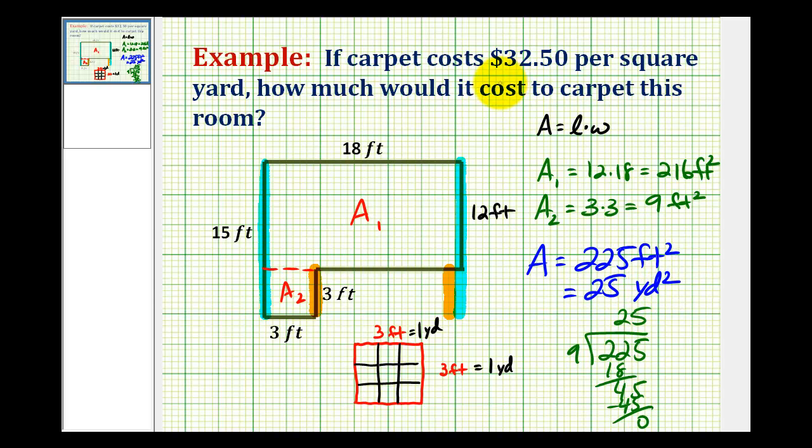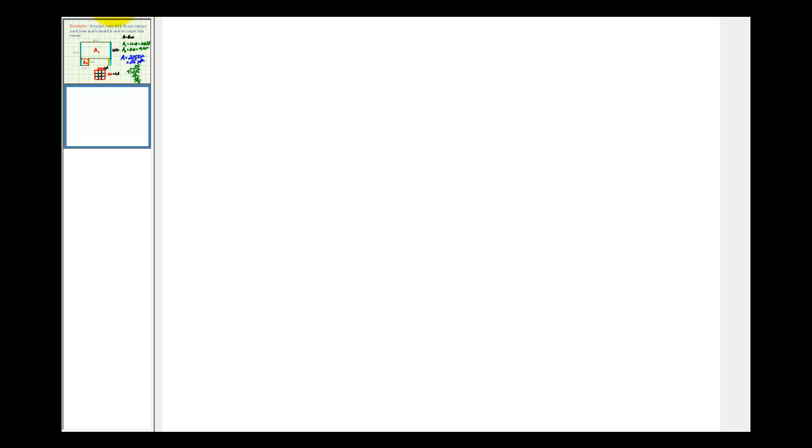And so, if it costs 32 dollars and 50 cents per square yard, the cost is going to be 3250 times 25. Let's go determine that cost on the next page. Again, the cost is 32 dollars and 50 cents per square yard, and we're going to purchase 25 square yards to carpet this room.